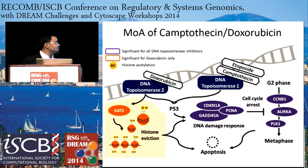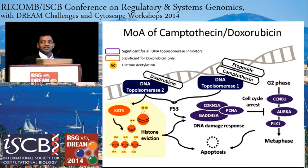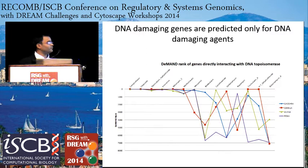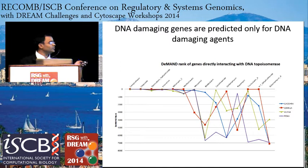We also found an additional gene for doxorubicin: SICK1. Doxorubicin is known to cause cardiomyopathy, and the gene involved in cardiomyopathy is SICK1. This suggests the method can also identify genes involved in drug toxicity, and this gene was only identified for doxorubicin. Furthermore, in our dataset there were five drugs involved in DNA damage, and the genes involved in the DNA damage response were predicted only for those drugs, not for any others with different mechanisms unrelated to DNA damage.